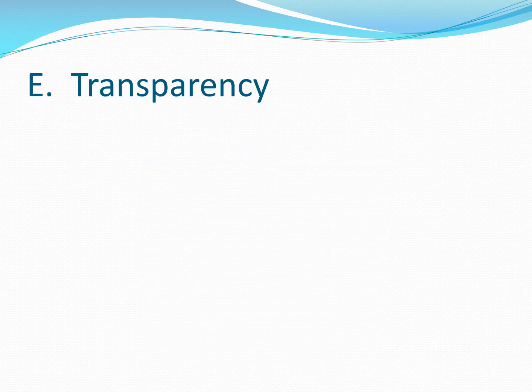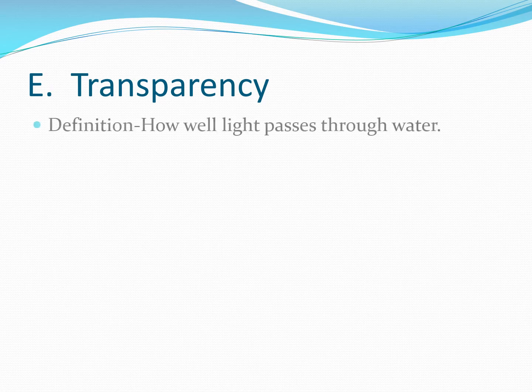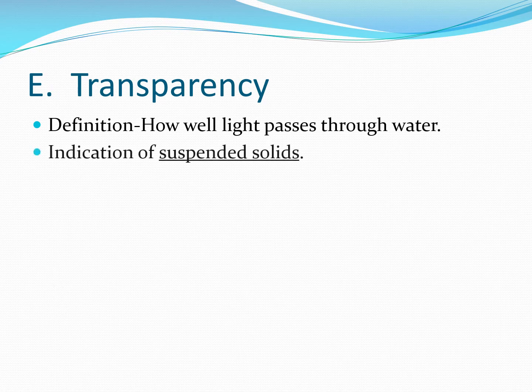Another characteristic is transparency, which is related to all of these — it's how well light travels through the water. We talked earlier about how if light can get to the bottom, you can have plants. So transparency is going to let us understand where plants might be and indicate how many suspended solids are in that water.